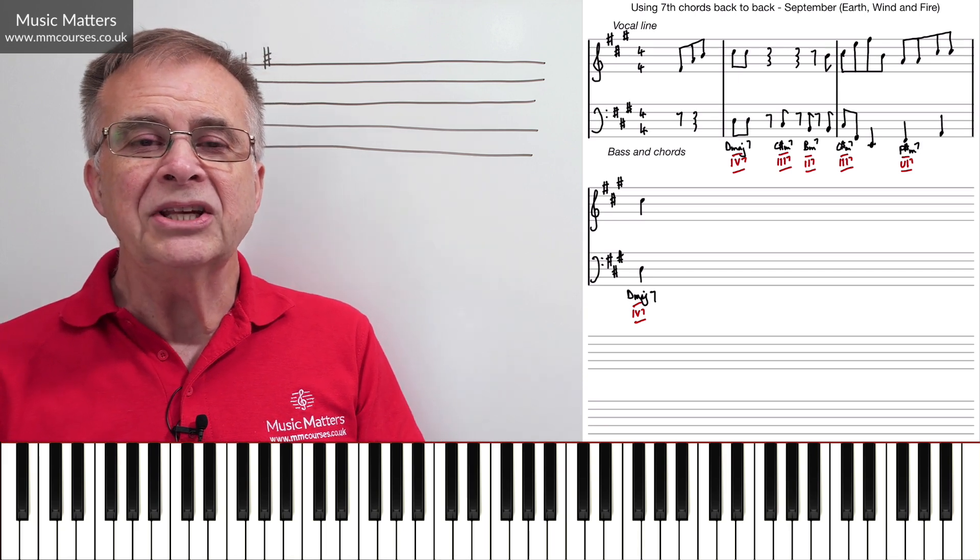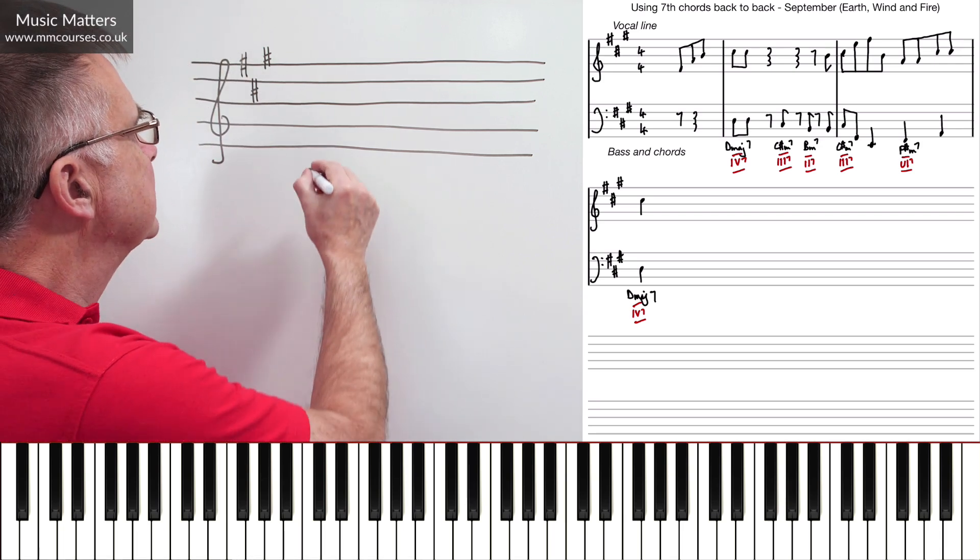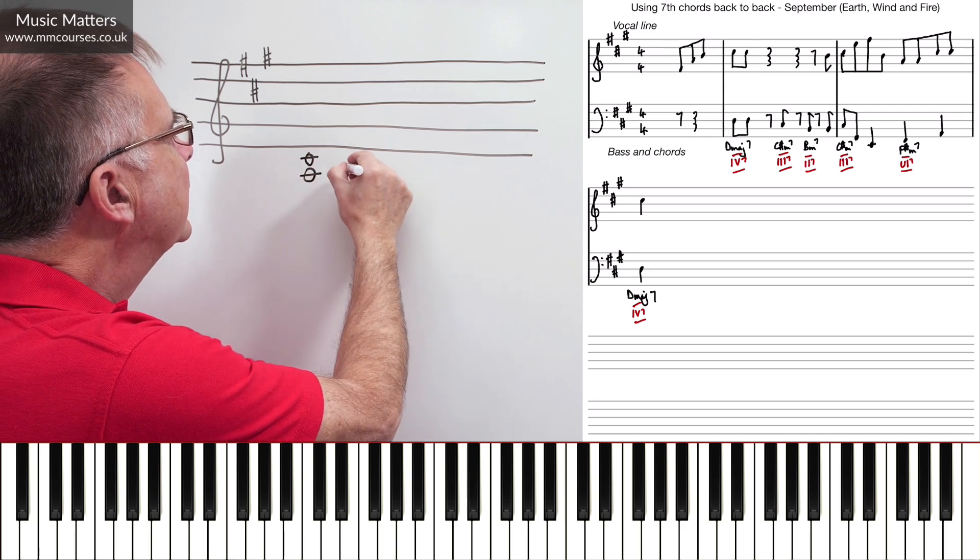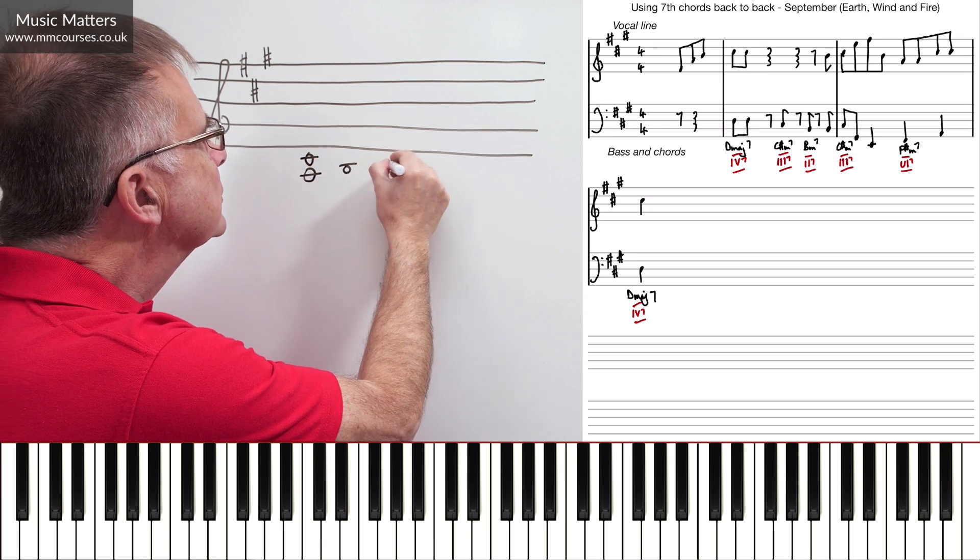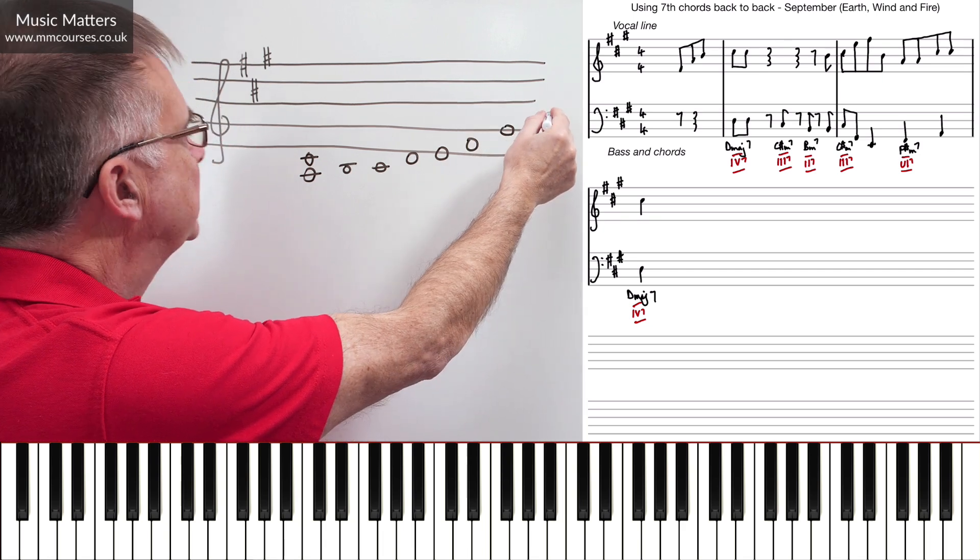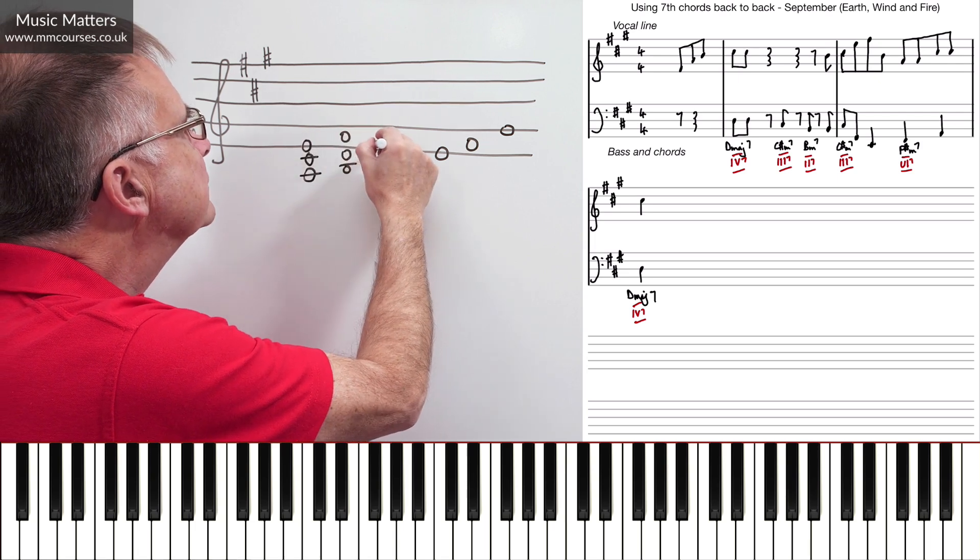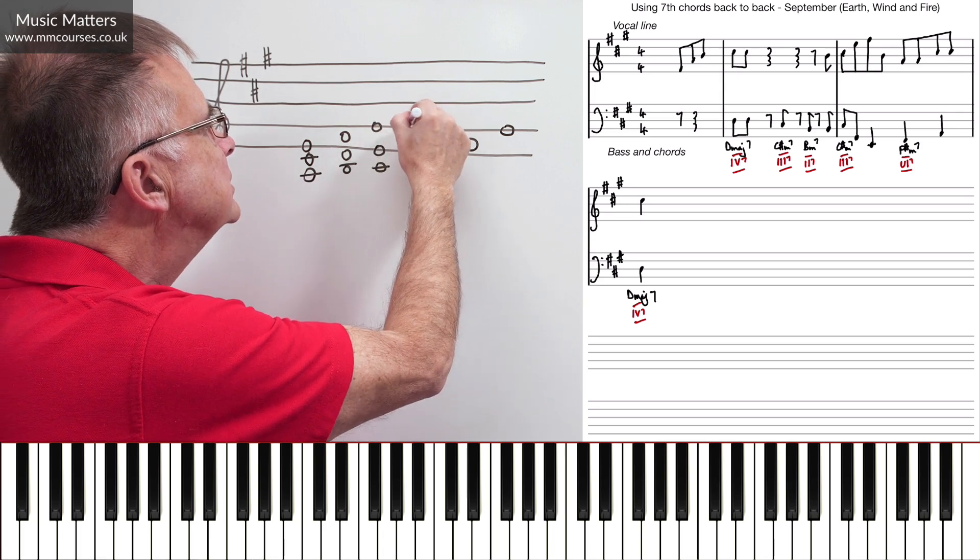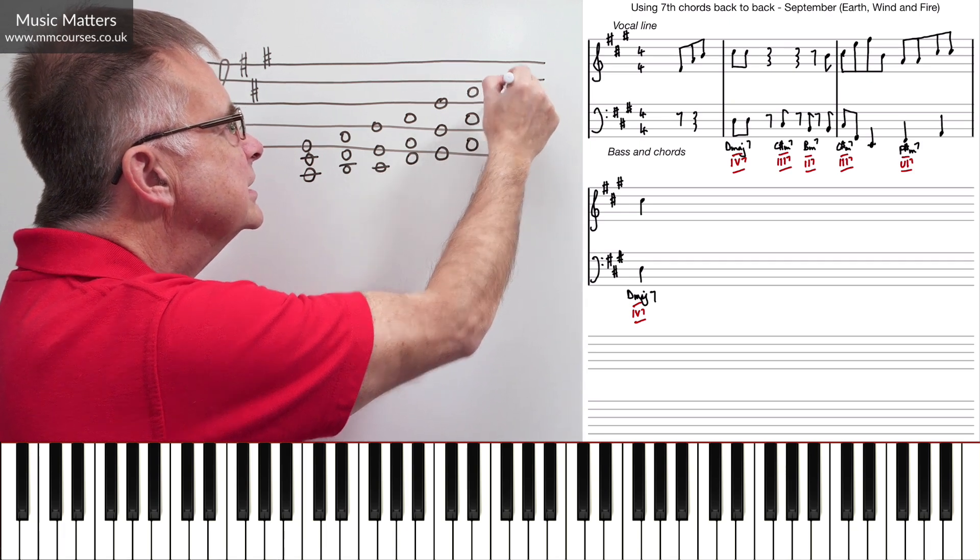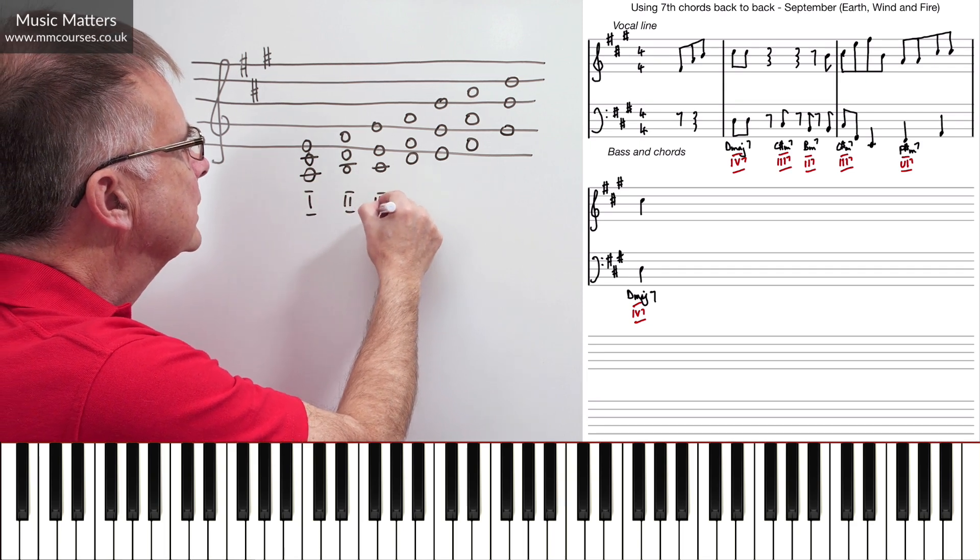The example we're going to look at in a moment is in the key of A major, so let's just think this in A major. If you want to get your seventh chords lined up in A major, first thing you need is a scale of A major. If we go up the scale, we don't need the top note, because the top note's A and A is the first note. Then if I put a third and a fifth above each of these notes, I've got my basic diatonic chords, diatonic triads—the chords that sit inside the key of A major.